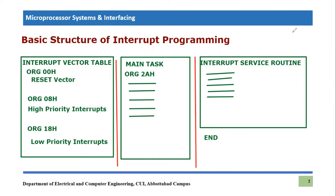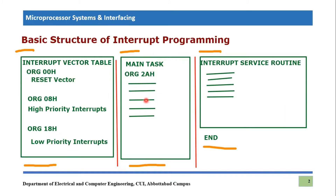This is the basic structure of any interrupt programming, especially in the PIC18F microcontroller. Our code starts from here and continues in a second part, finishing at a certain point. The overall program can be broken into three different parts. One part is what we normally write in simple programming, which is called the main task of the microcontroller.